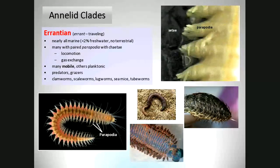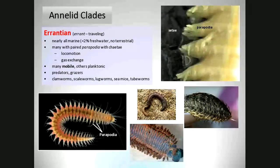Sporophyte is the structure that produces spores. In biology, 'phyte' (P-H-Y-T-E) refers to a structure that contains something. So sporophytes are the structure in which you find the spores. In ferns, the sporophyte is the big fern frond — if you look on the back where the sori, the little brown dots, are, that's where the spores are being made. So that's the sporophyte.